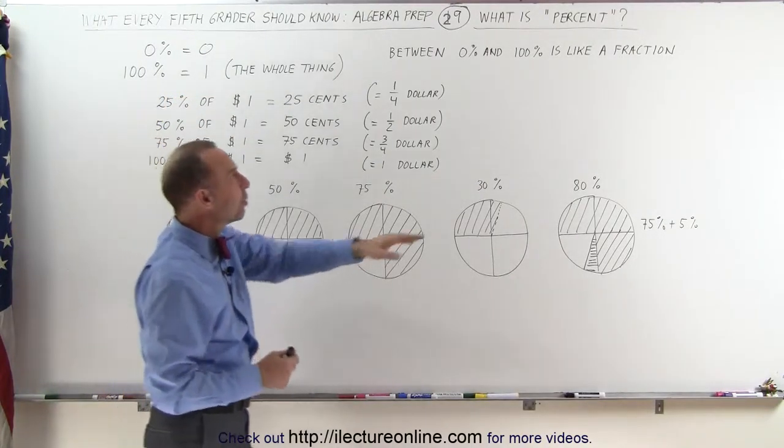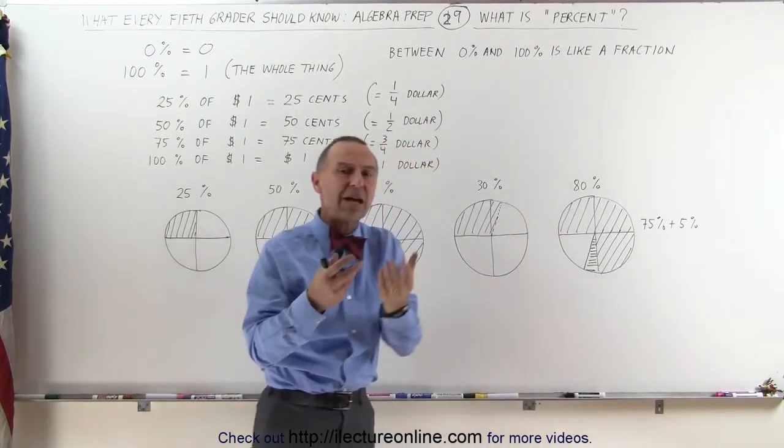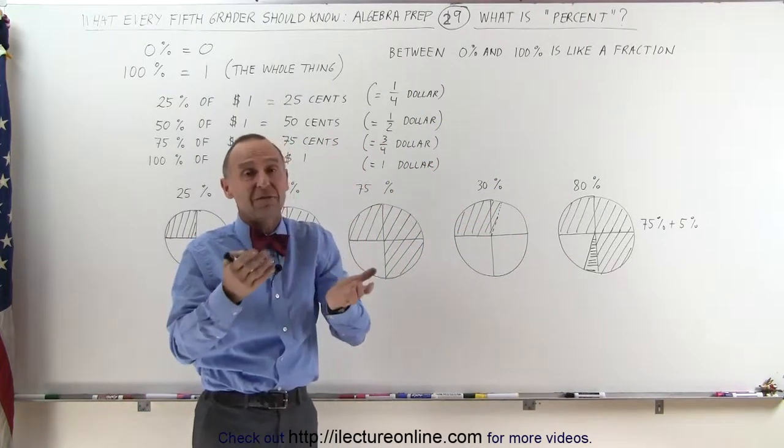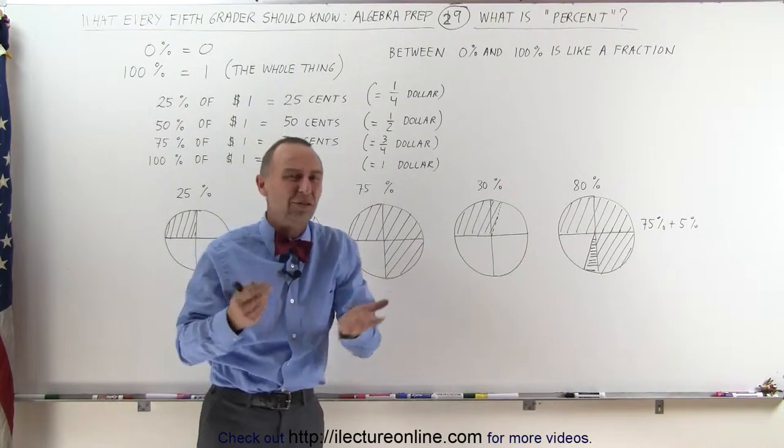If we have a percent between 0 and 100, it's like having a fraction of it, like a portion of it, like half of it, 3 quarters, 2 tenths, something like that.